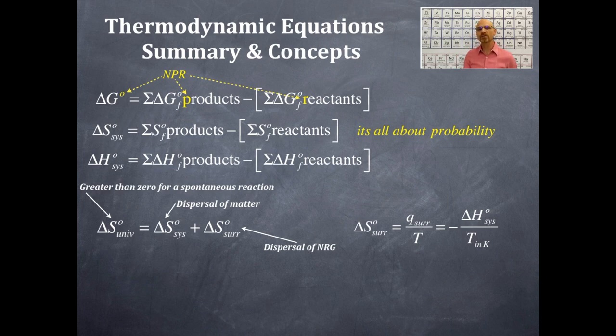So the delta S naught for the surroundings is equal to Q for the surroundings, that is the heat content, divided by the temperature, which is equal to negative delta H naught for the system, divided by the temperature in Kelvin. And this is the dispersal of the energy.